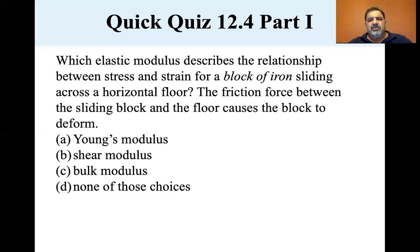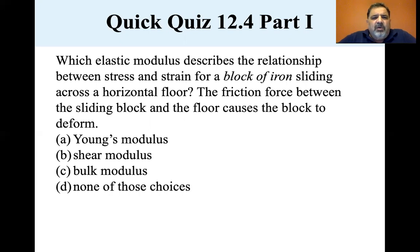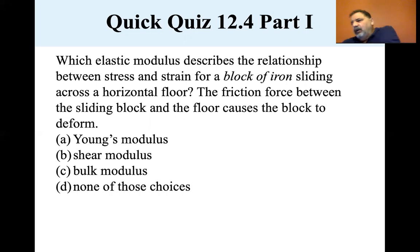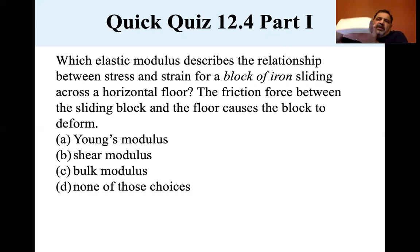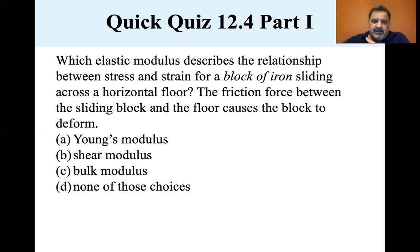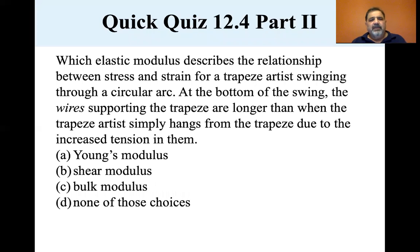Quiz: Which elastic modulus describes the relationship between stress and strain for a block of iron sliding across a horizontal floor? The friction force between the block and floor causes the block to deform. Here's a block sliding — it deforms like this. That's the shear modulus, and sure enough the answer is B, the shear modulus.